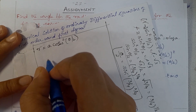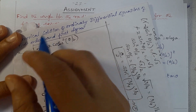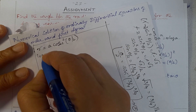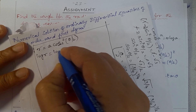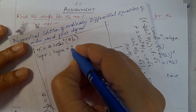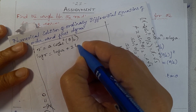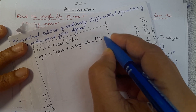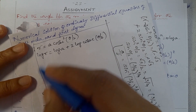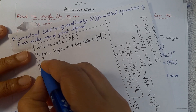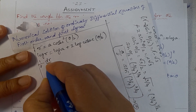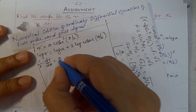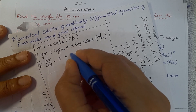Again, following the same procedure, taking log on both sides: log R = log a + 2·log(cosec(θ/2)). Next, differentiation with respect to θ: (1/R)·(dR/dθ) equals — log a differentiates to 0 because a is constant — plus 2 times the differentiation of log(cosec(θ/2)).